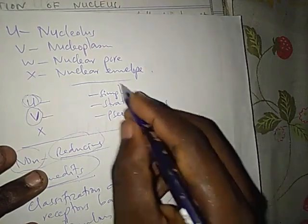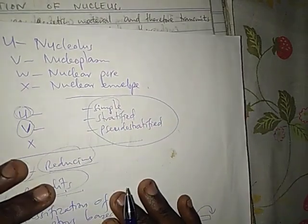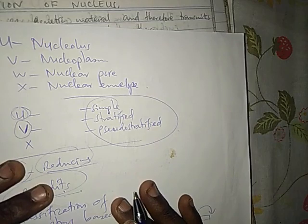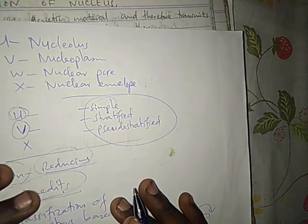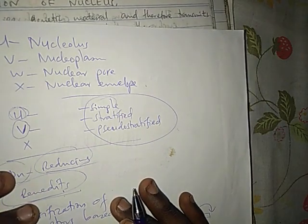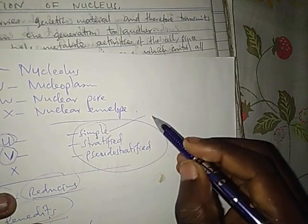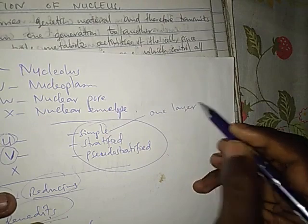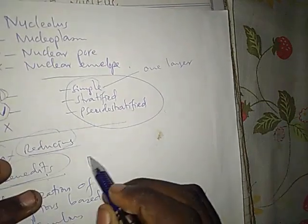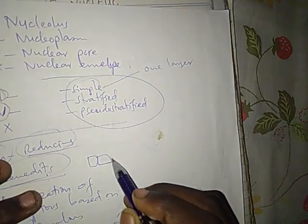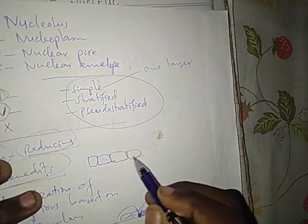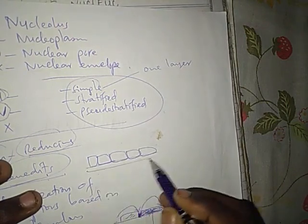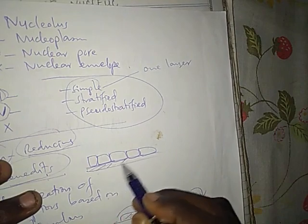You should understand these basic things in order to simplify your understanding and answering of questions. If we say 'simple,' it means it is one layer — one layer of cells. So a simple epithelium has one layer of cells and then here we have the basement membrane.